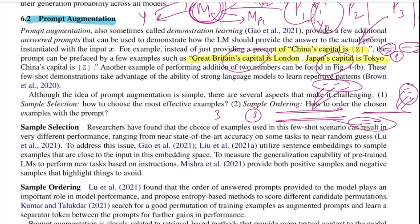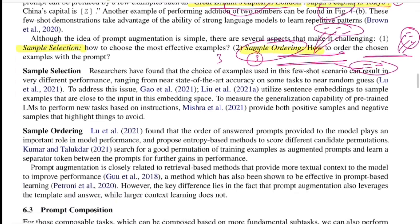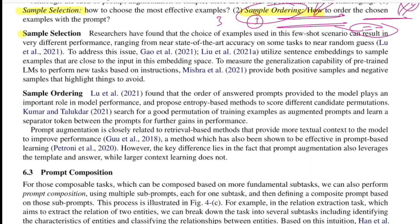Two fundamental challenges make prompt augmentation difficult. First is sample ordering: which example do you present first — 'Great Britain's capital is London' or 'Japan's capital is Tokyo'? Second is sample selection: which examples are most effective and likely to yield higher accuracy when the test sample is given? Research has addressed both questions.